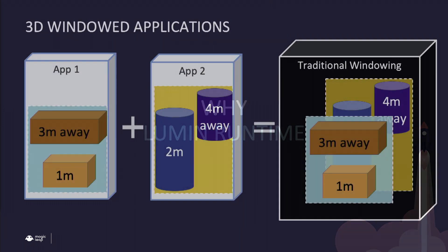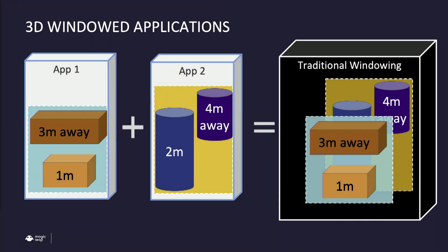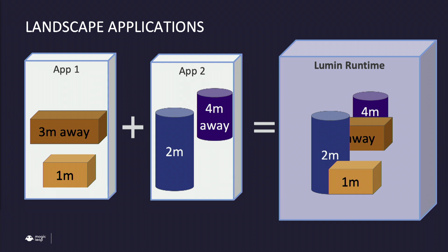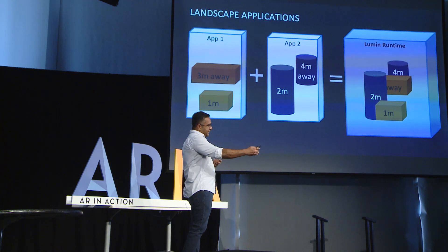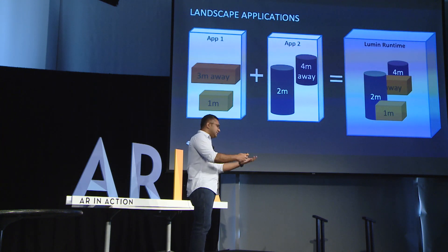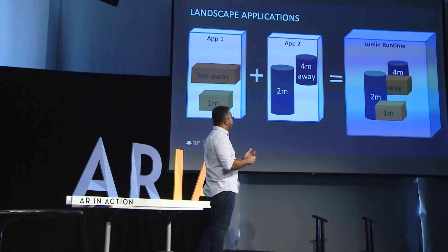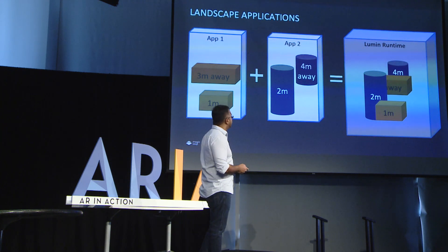So why Lumen Runtime? On a desktop, when you're running multiple 3D apps, you're pretty much running them in Windows, so the output of those is 2D surfaces. Mixing those 2D surfaces is technically complex and probably not achievable. That's where Lumen Runtime comes in — it takes multiple 3D apps, intermixes them realistically, and it's spatially accurate. If you have a 3D virtual object in front or behind, it's rendered properly — the sorting is all done properly for you.